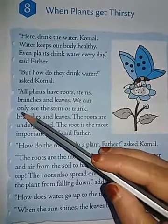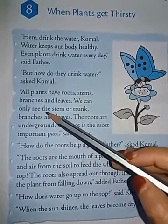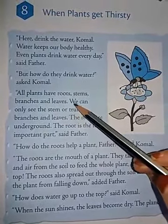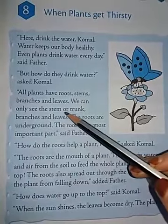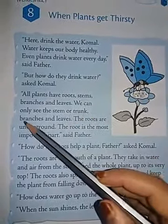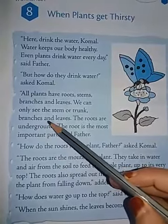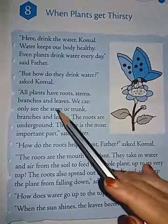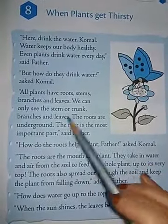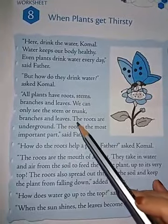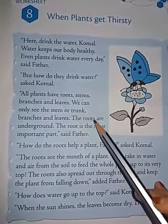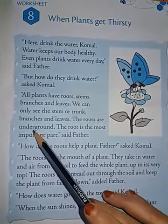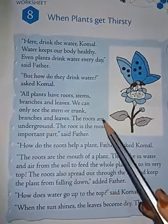We can only see the stem or trunk, branches, and leaves. The roots are around underground — we cannot see them.